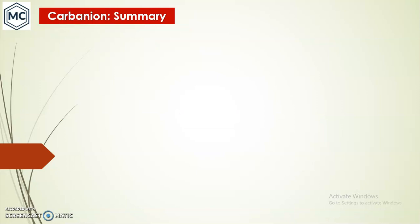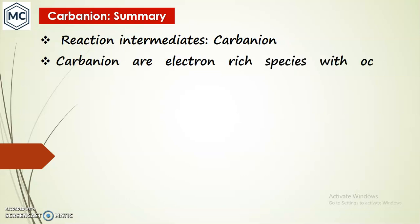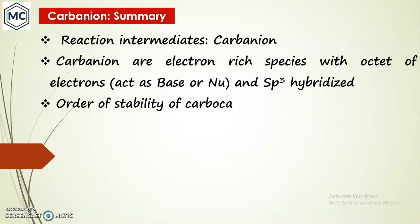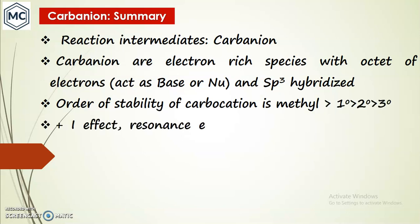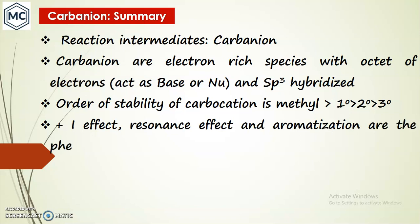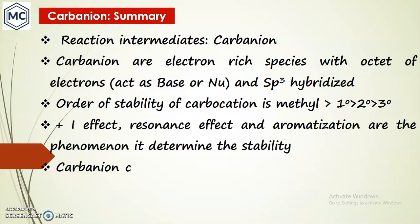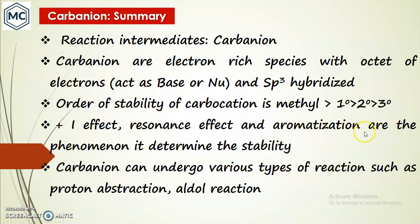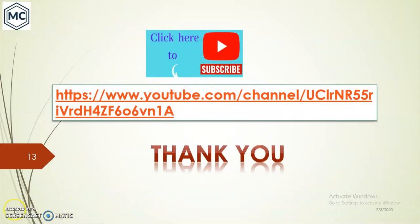In summary, carbanions are electron-rich species with an octet of electrons in the outer shell. They act as bases or nucleophiles, are sp3 hybridized with pyramidal structure. The order of stability of alkyl carbanions is: methyl > primary > secondary > tertiary. Inductive effect, resonance, aromaticity, and hybridization of carbon determine stability. Carbanions undergo reactions such as proton abstraction and aldol condensation. Thank you for watching.